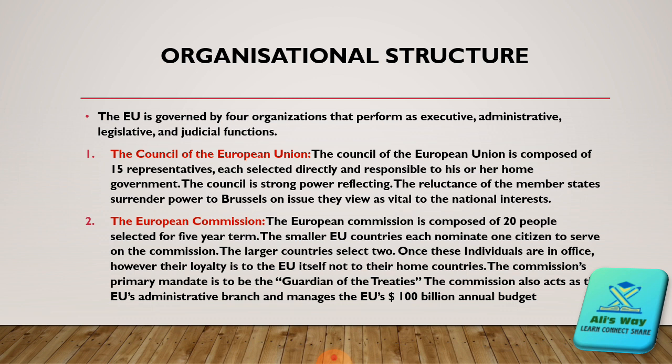The second part of the European Union is the European Commission. The European Commission is composed of 20 people selected for a five-year term. Smaller EU countries each nominate one citizen to serve on the Commission, while larger countries select two. Once these individuals are in office, their loyalty is to the European Union itself, not to their home countries. The Commission's primary mandate is to be the guardian of treaties, and it also acts as the EU's administrative branch, completing the day-to-day work of the European Union.